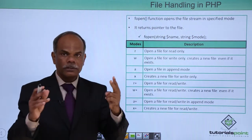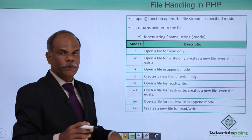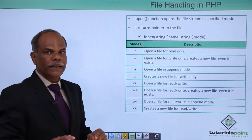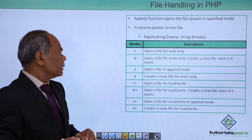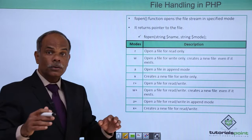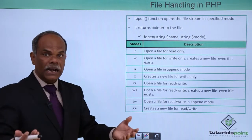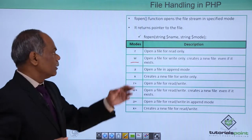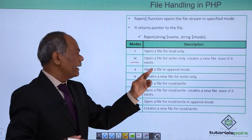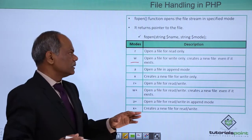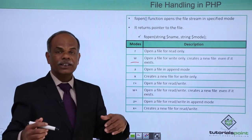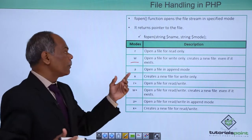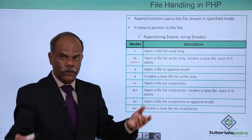Two arguments or two parameters are needed for the fopen function: file name and mode. These are the different modes in which the file can be opened. When you want to open a new file or start a new file, it has to be opened in w mode. It will open a file for writing purpose. It creates a new file irrespective of whether that file is already present in the disk or not. Whenever you open a file in w mode, it will start a new file.